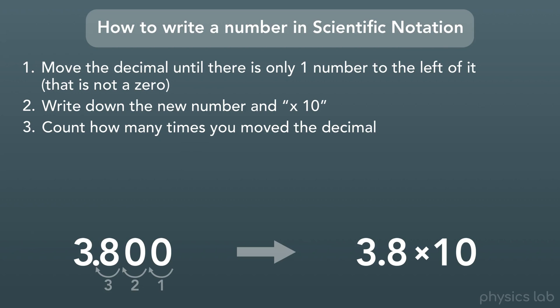So the next step is to count how many times we just moved the decimal point. In our case, we moved it three times. And finally, we write that number as our exponent above the 10.